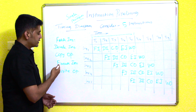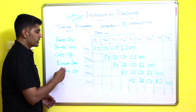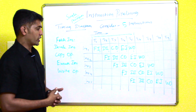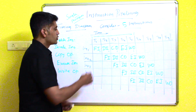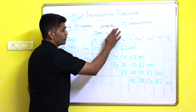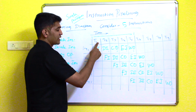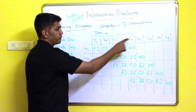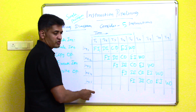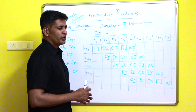The third phase is copying the operand, then instruction execution, and the last phase is operand store — writing the operand to the exact memory location. In this timing diagram example, we are considering five instructions for execution, spanning time t1 to t9.